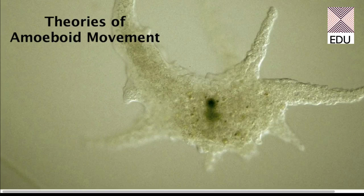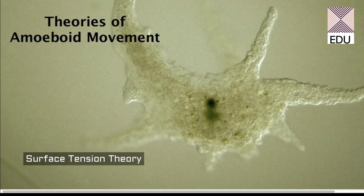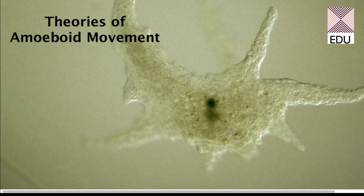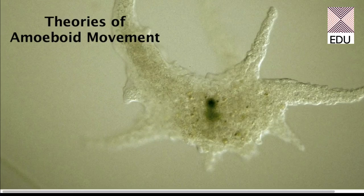The second theory is the surface tension theory, given by Berthold in 1886. This theory explains amoeboid movement as being due to a difference in surface tension between the plasma membrane of the amoeba and the substratum on which it is moving. Due to this surface tension difference, the amoeba moves in water.